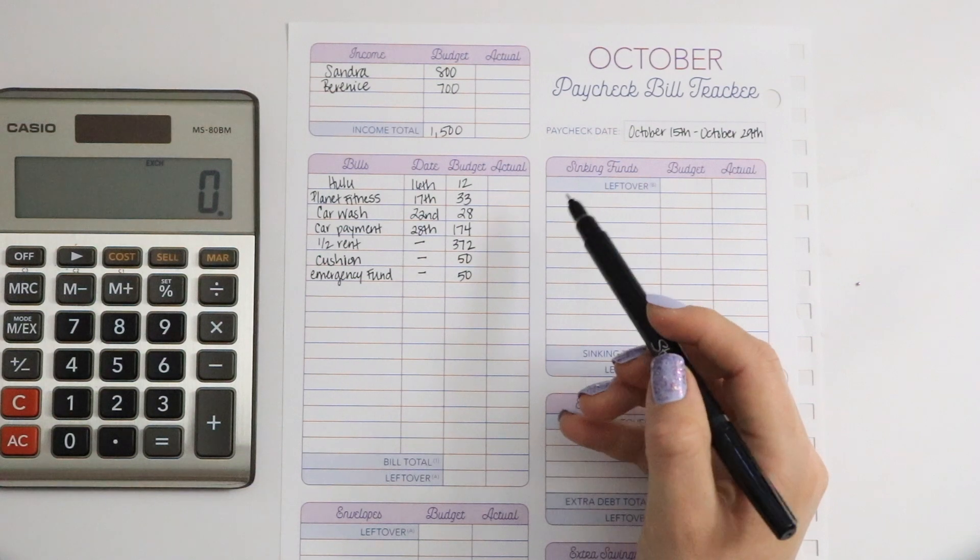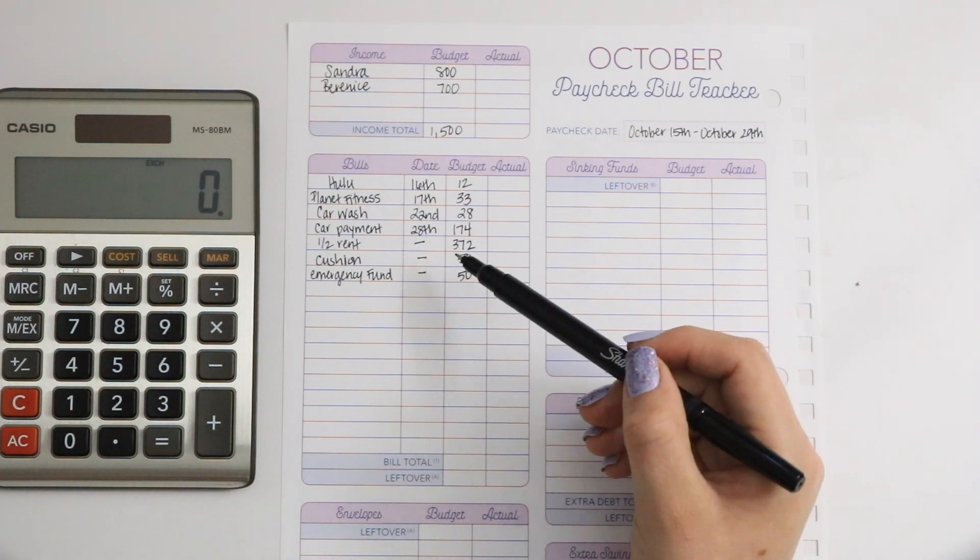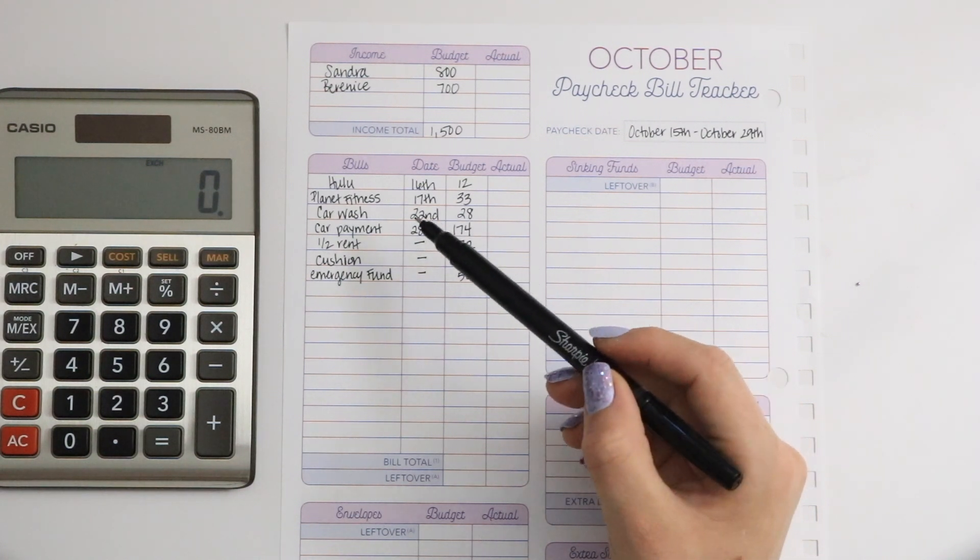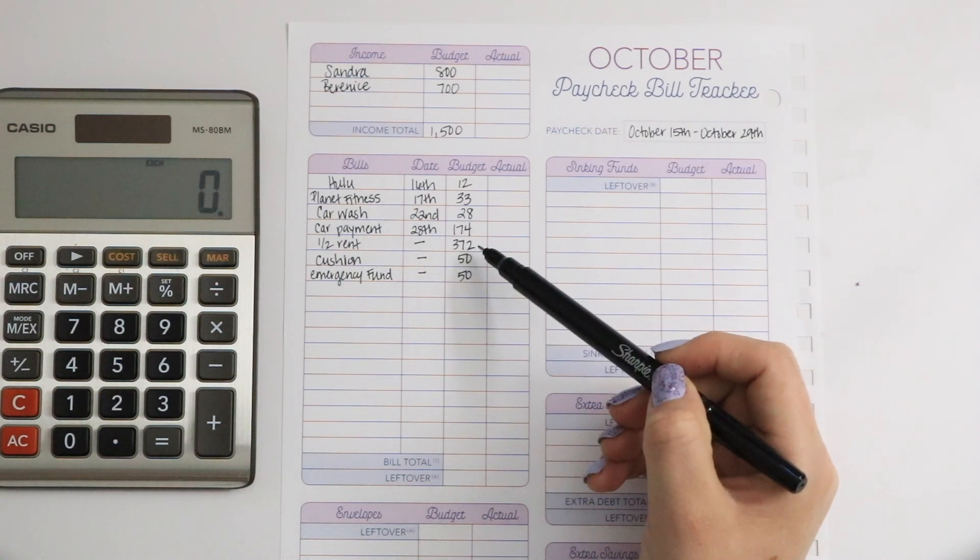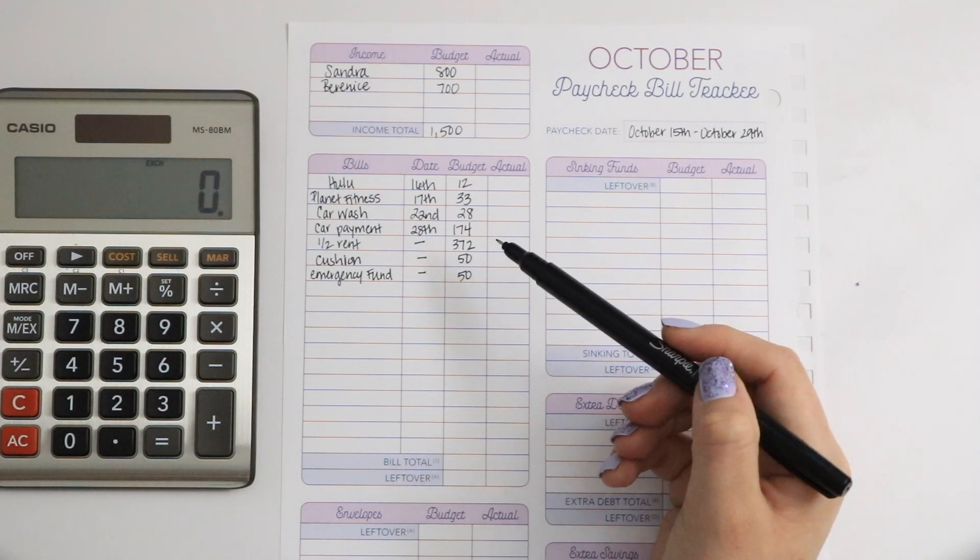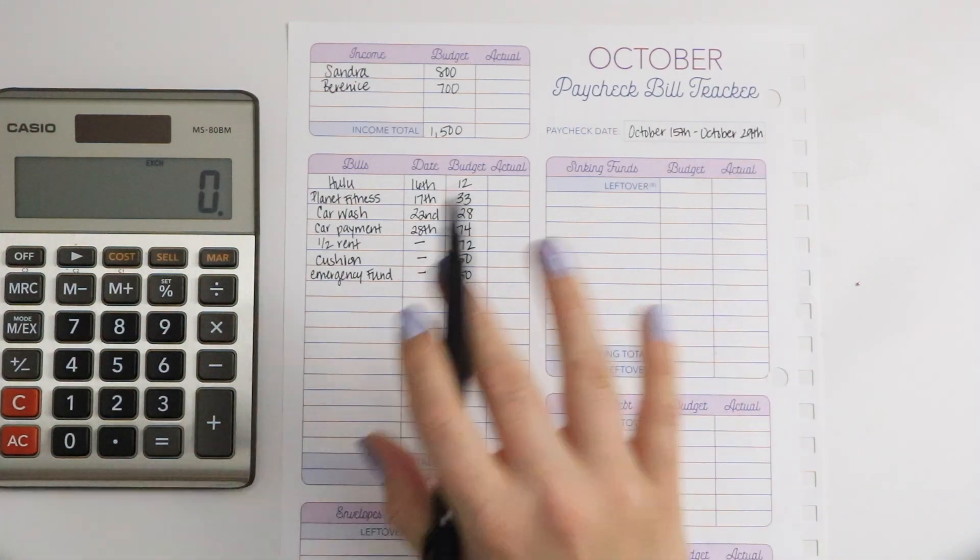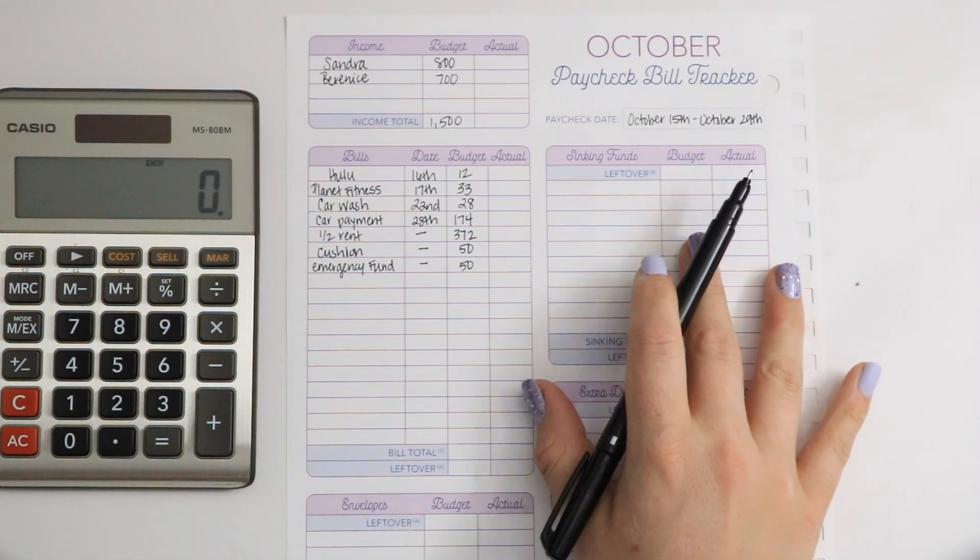We have decided to use the emergency fund for the $700 and then our rent will go up $60. So instead of $743 we're going to have to add $60 toward that. Hopefully it does not go up any more than that.